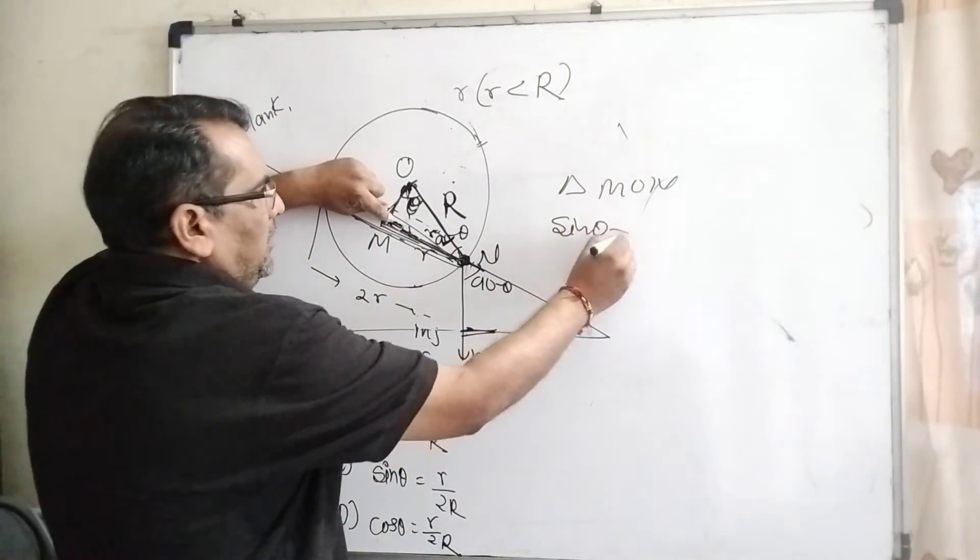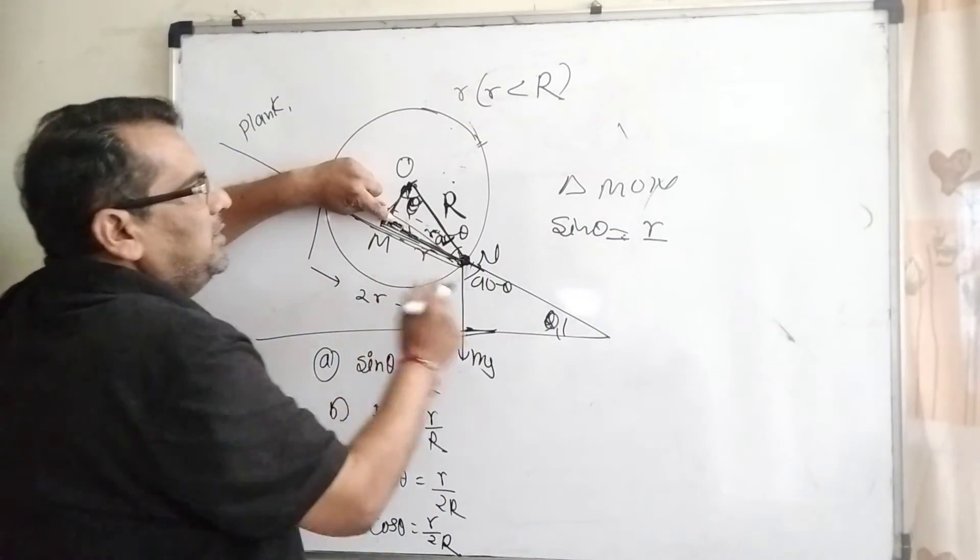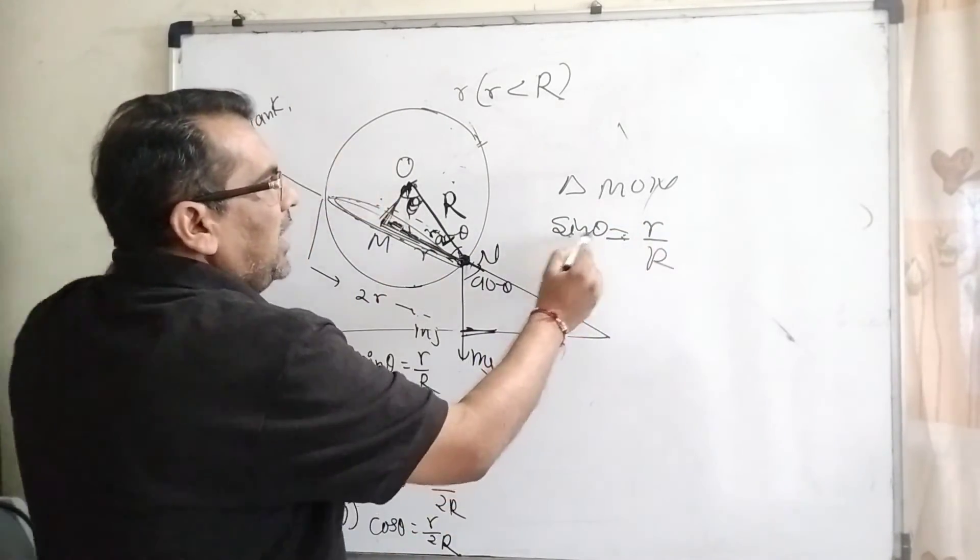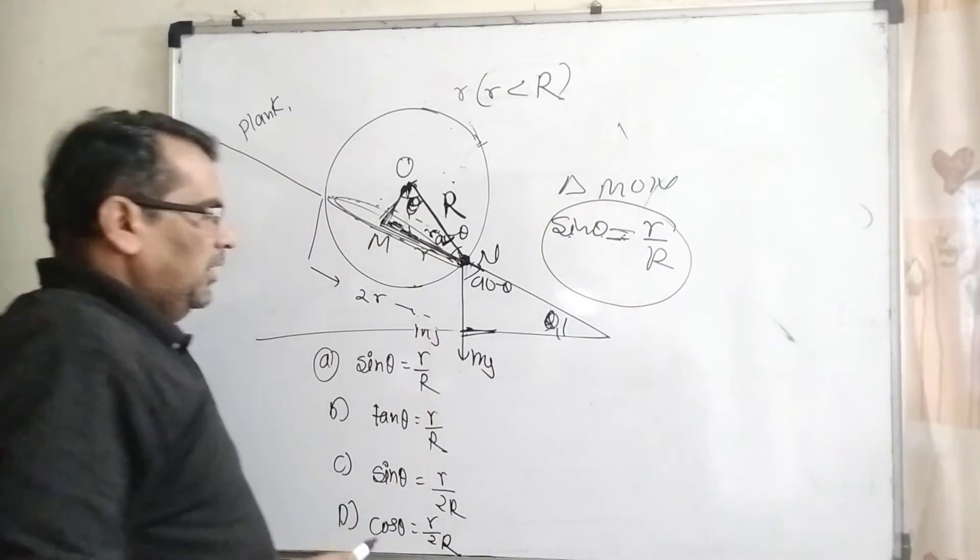The perpendicular is r and this is the hypotenuse. Then sine theta equals small r by capital R. This will be our answer.